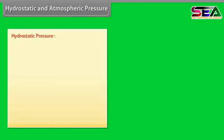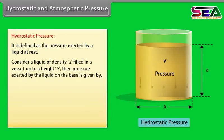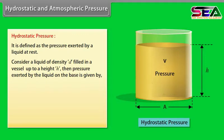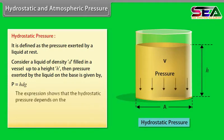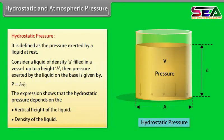Hydrostatic pressure is defined as the pressure exerted by a liquid at rest. Consider a liquid of density D filled in a vessel up to a height H. Then the pressure exerted by the liquid on the base is given by P = H × D × G. This expression shows that hydrostatic pressure depends on the vertical height and density of the liquid.